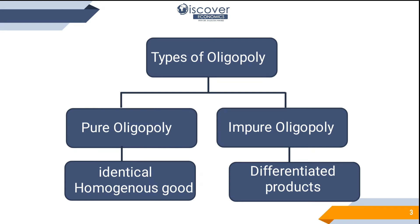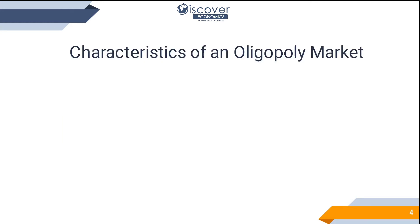What are the types of oligopoly? Pure oligopoly and impure oligopoly. Pure oligopoly is when we have identical or homogeneous products, and impure oligopoly is when we have differentiated products.